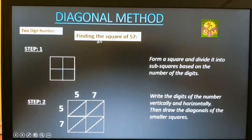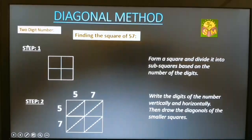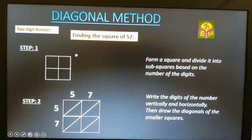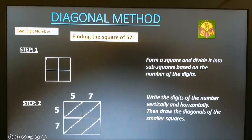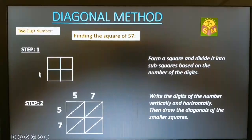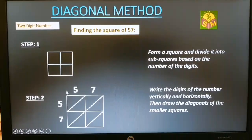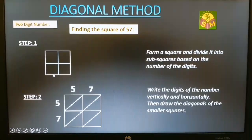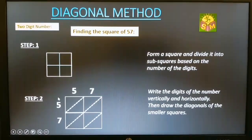Consider a two-digit number 57. The following steps ought to be followed to find the square of 57. Step 1: Make a square and divide the square into four small squares, then draw the diagonals of the smaller squares.